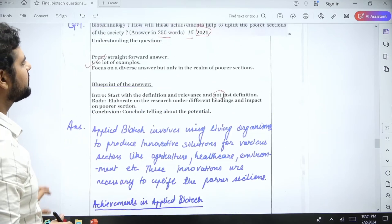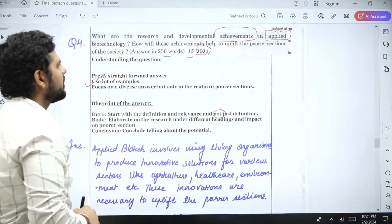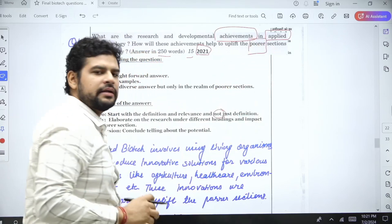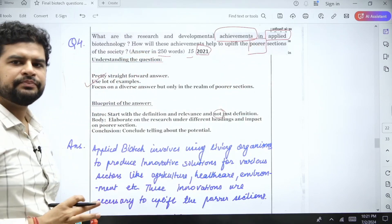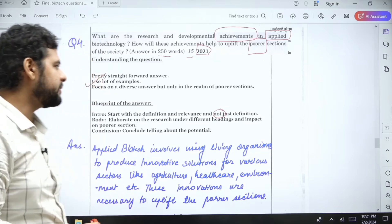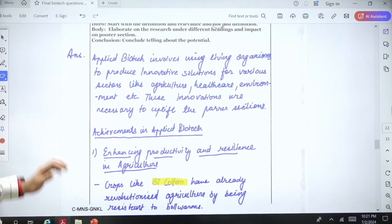Elaborate on the research results under different headings. We'll group the achievements in different headings. They have been very specific and asked about poorer sections of the society, so whatever development you are sharing, you need to relate them to the benefit of poorer sections.